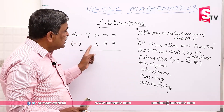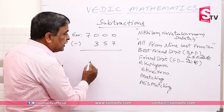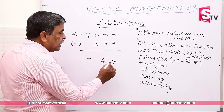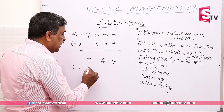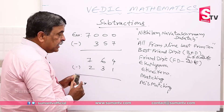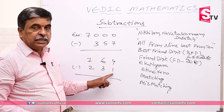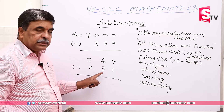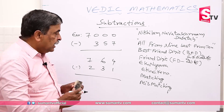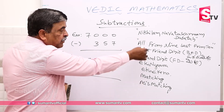Here we have a mismatched case. For example, 7, 6, 4 is going to be subtracted by 2, 3, 1. Now compare: 4 is the bigger digit, 1 is the smaller digit; 6 is the bigger digit, 3 is the smaller digit; 7 is the bigger digit, 2 is the smaller digit. This is a matching case, so we can apply this formula.